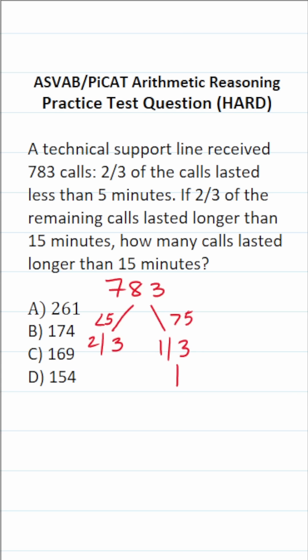More specifically, this question wants to know this: of the remaining calls, two-thirds of them went beyond 15 minutes. We want to know what that number is. So the first thing we have to figure out is how many calls went beyond five minutes, and that's going to be one-third of 783. Once we get that number, we're going to find two-thirds of it because that's the number of calls that went beyond 15 minutes.